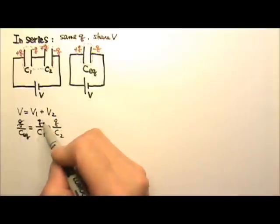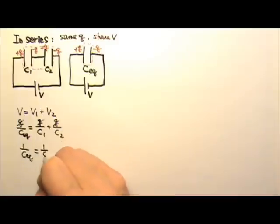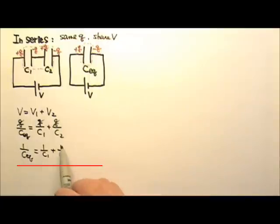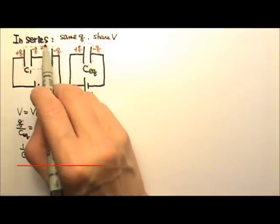And since all the charges are the same amount, that means that we get this equation: 1 over C equivalent equals to 1 over C1 plus 1 over C2. So this is the equation that can give us the equivalent capacitance when two capacitors are connected in series.